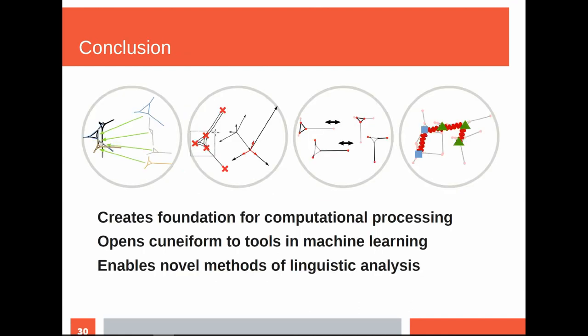What does this enable us to do? We create a foundation for computational processing. Because up to now, cuneiform script could not be queried like Latin text — you could not search for a specific word in the corpus. This opens it to tools in machine learning: if you have a distance function and a uniform mathematical representation, you can apply tools like k-means or hierarchical clustering or different methods that assume a distance function and uniform vector representation. It also enables novel methods of linguistic analysis — you can look at how often a word was used in which tablets, which patterns and sub-symbols are occurring quite often. This is a toolset which enables such analysis.